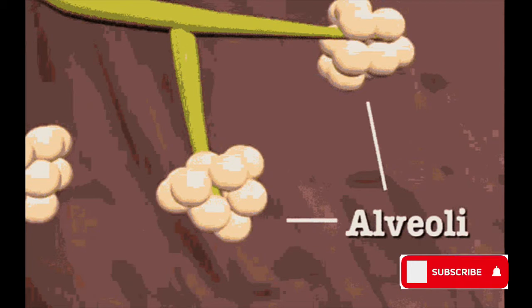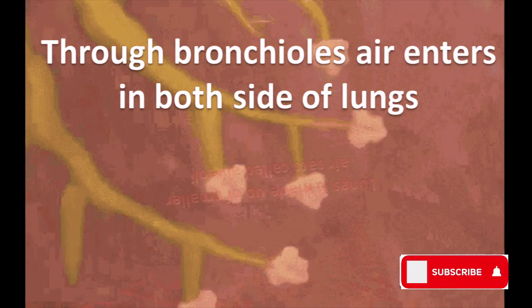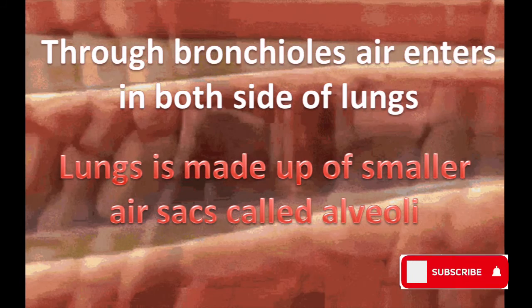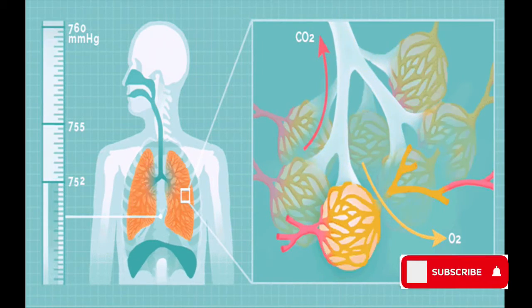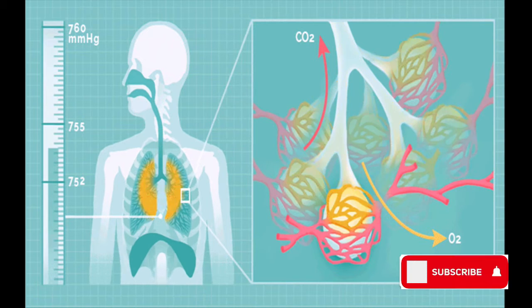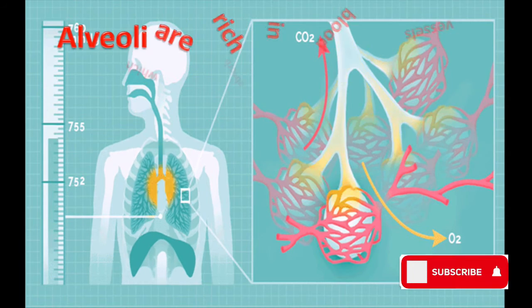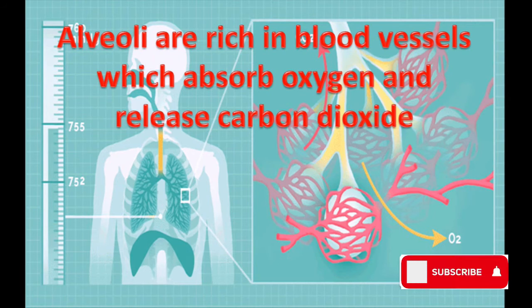The smallest part of the lungs is the bronchioles. Through bronchioles, air enters both sides of the lungs. The lungs are made up of smaller air sacs called alveoli. The alveoli are rich in blood vessels, which absorb oxygen and release carbon dioxide.